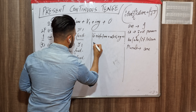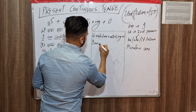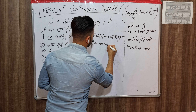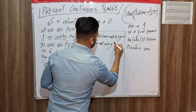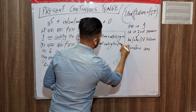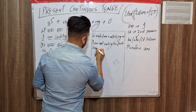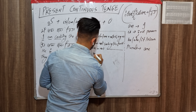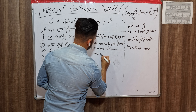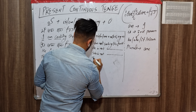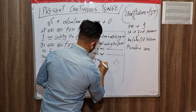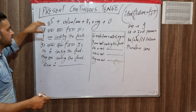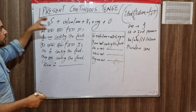For negative sentences, we simply add 'not' after the auxiliary verb. For example: 'I am not cooking the food.' 'He is not cooking the food.' 'She is not cooking the food.' 'They are not cooking the food.' So this is how we form negative sentences in present continuous tense.